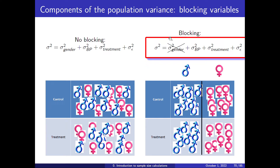By separating by gender — a blocking variable — you identify the part of blood pressure variability explained by gender. Then you compare the treatment effect delta only to the remaining unexplained sources such as age, lifestyle, and measurement noise. The gender variance has been removed from the comparison, making the test much more powerful. Equivalently, you can show the same effect with fewer samples.